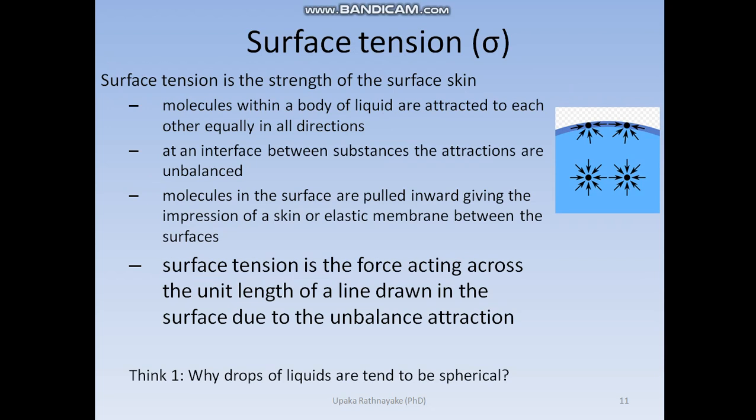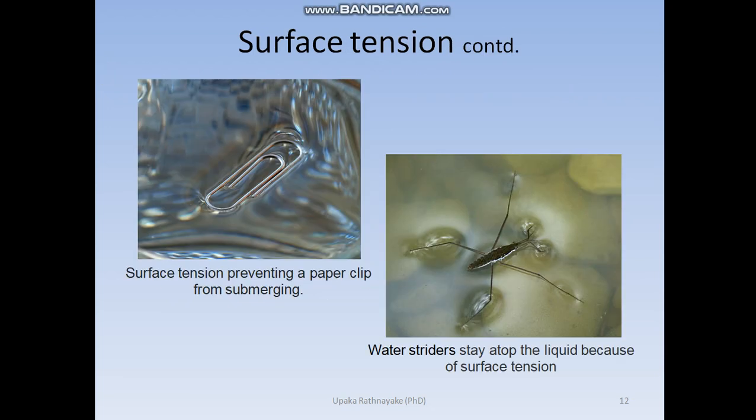We will now move to the next topic: surface tension, denoted by sigma. Before going to the definition, let us look at these pictures. A paper clip is floating on the water surface, and a water strider can walk on the water surface. For these to happen, there should be an upward force from the water surface, because we know these objects have weight acting downwards. So there should be something balancing that force — an upward force from the water surface.